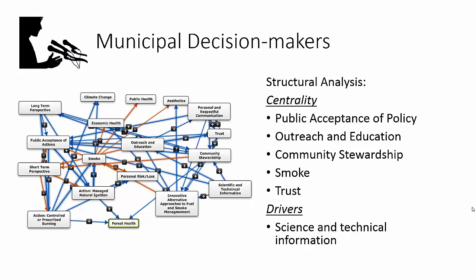For the municipal decision makers, you can see the model they developed. By using some of the metrics available in Mental Modeler, we can look at how the structure of their model and what they included differed from the other groups. A lot of the discussion from the community side was focused on central concepts — the ones with the highest centrality scores. Key topics included public acceptance of the policy, the role of outreach and education, community stewardship, and things like smoke. Science and technical information was seen as very important in driving the dynamics of these factors.